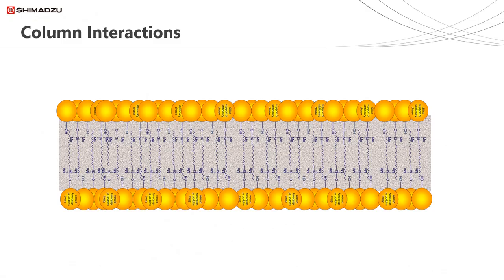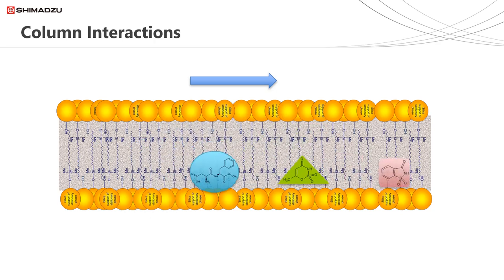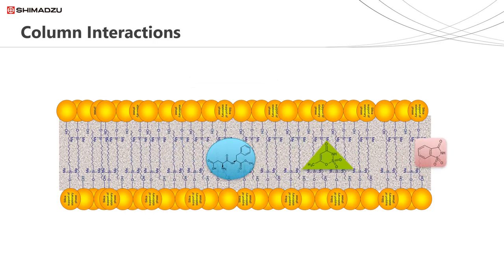This is a representation of what is going on inside an LC column. The stationary phase is attached to silica particles, and this is the direction of flow of the mobile phase. If we inject a sample of these three analytes, they will start to move down the column, either interacting with the stationary phase or being carried along by the flow of the mobile phase. If we stop the flow at this point, we can see that the three analytes are in different positions down the column. This red analyte here has had the least interaction with the stationary phase and is eluting first — it has the shortest retention time.